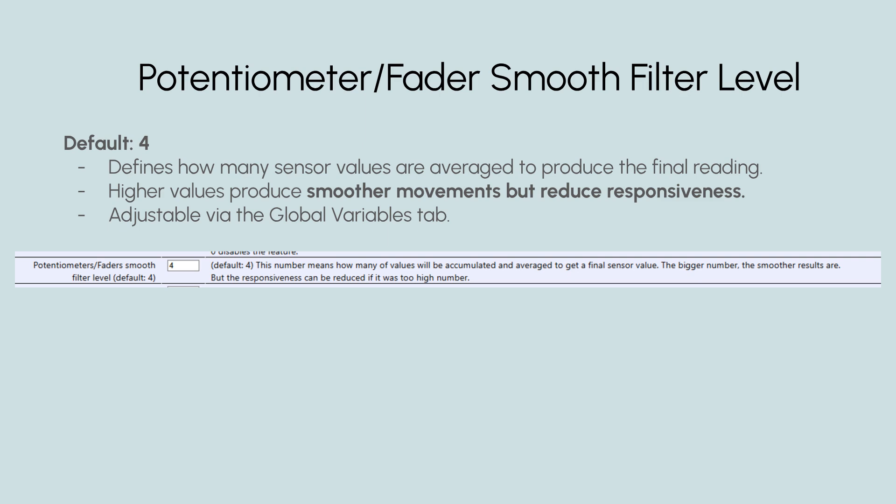Potentiometer/fader smooth filter level. The default value is 4. This setting determines how many sensor values are averaged to produce the final reading. A higher filter level results in smoother movements, which can help eliminate sudden jumps or fluctuations. However, increasing the value also reduces responsiveness, making the controls feel slower. If you prefer a more immediate response, consider using a lower filter level. You can adjust this setting in the global variables tab to find the right balance between smoothness and responsiveness based on your needs.